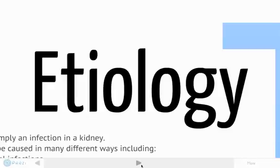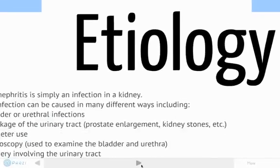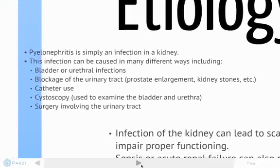Let's move on and discuss the etiology of pyelonephritis. Pyelonephritis, simply put, is an infection in a kidney. This infection can be caused in many different ways. The most common cause is a bladder or urethral infection — a UTI in other words. These infections can travel up the urinary tract and often localize in the renal pelvis, causing that inflammation.